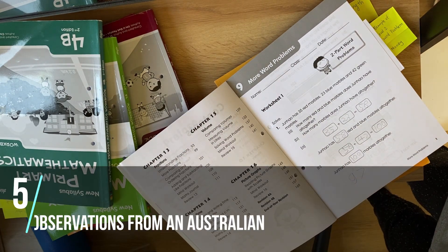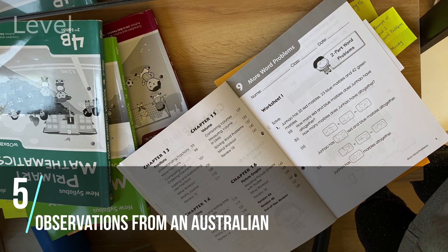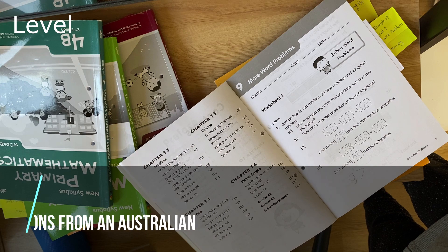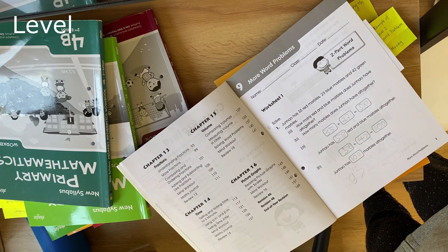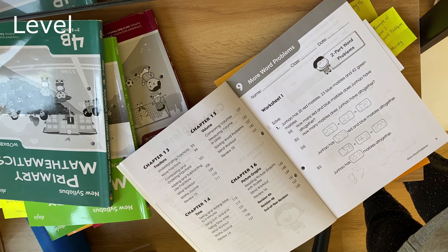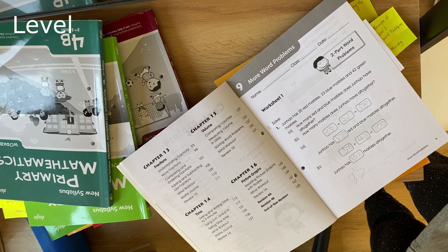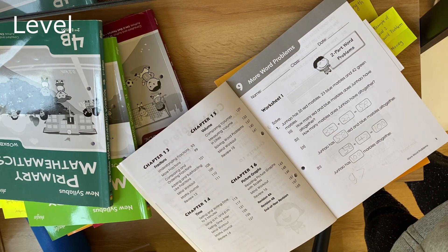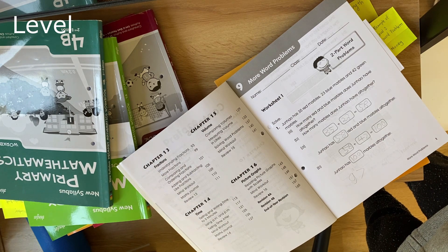I have some comments about using Singapore Maths in Australia. So number one is the leveling. Singapore Maths tends to aim at a higher level than what we're used to in Australia. So if you have a student in third grade, I would recommend buying the second grade. If you have a student in fourth grade, I would recommend the third level. Level one is pretty comparable, I think. But once you reach level two, there's a big jump and you'll notice that.